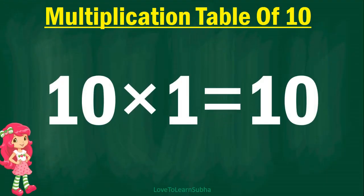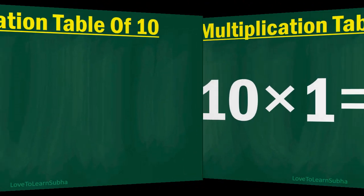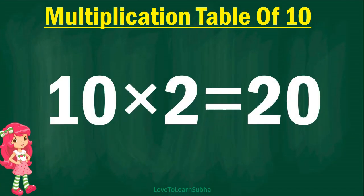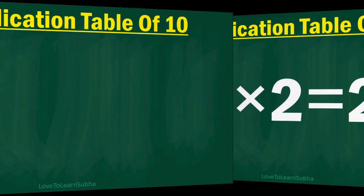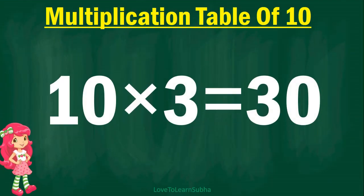10 ones are 10, 10 twos are 20, 10 threes are 30,